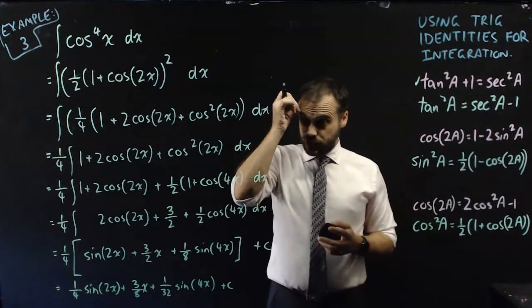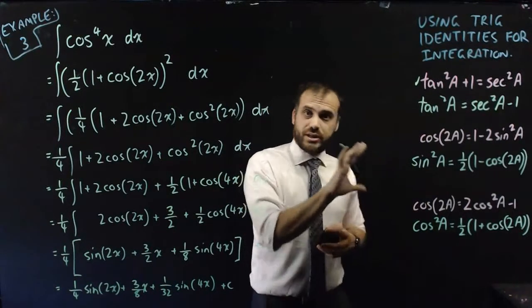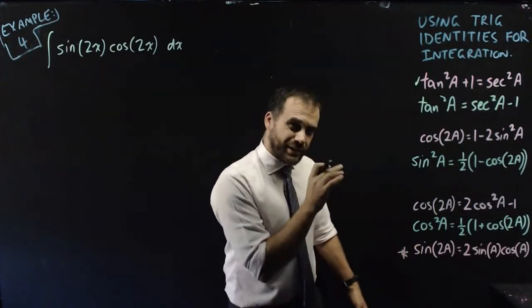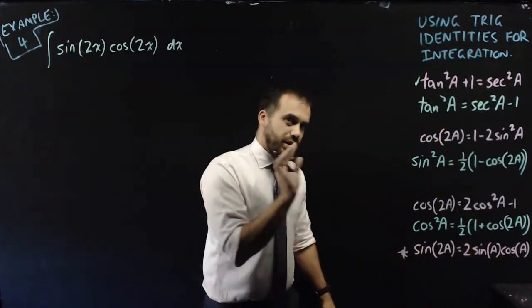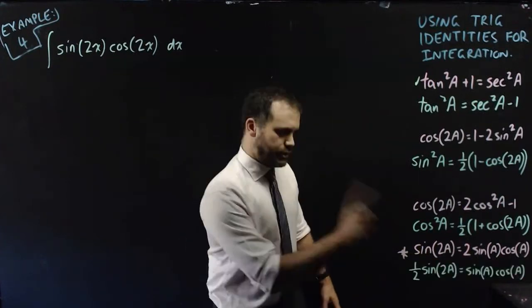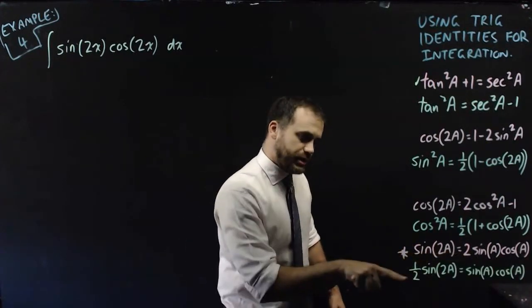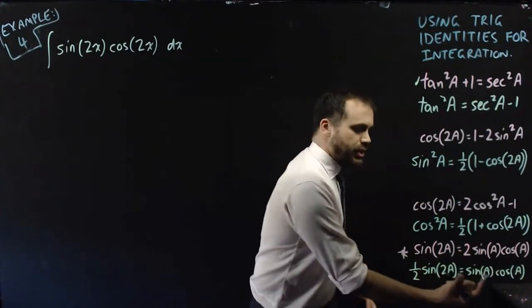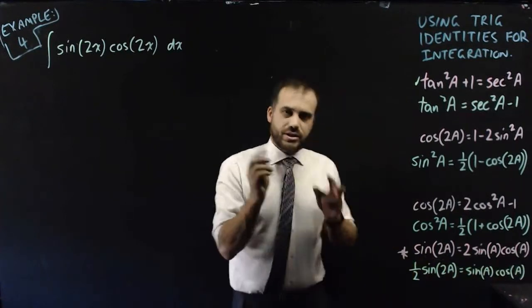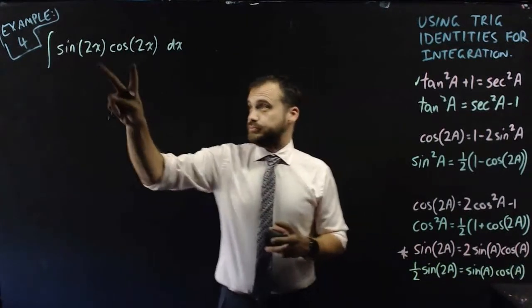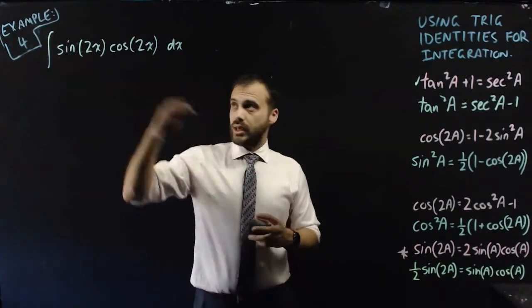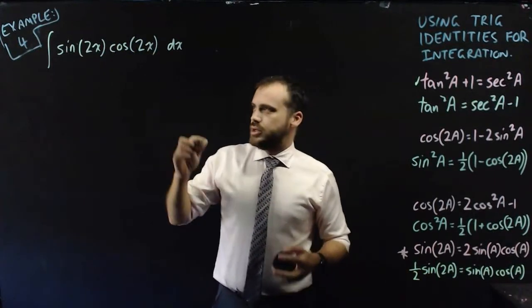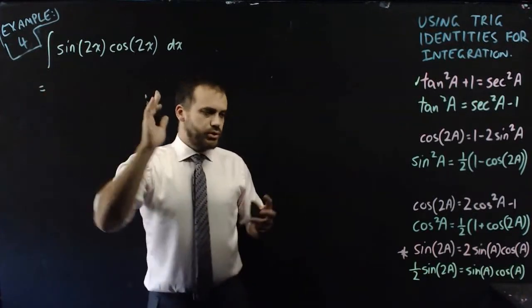I'm going to do one more example here, and I'm going to do one with an extra identity. So new worked example, new trig identity. Now it's going to be useful to think about this identity in a slightly rearranged way, just by taking that two and bringing it to the other side as a half. So now we can say that half sine(2A) is equal to sin A cos A. So whenever you see a sine and a cos being multiplied by each other, like something like this, and the powers are just one and one, you can use this identity to make it easier to integrate.